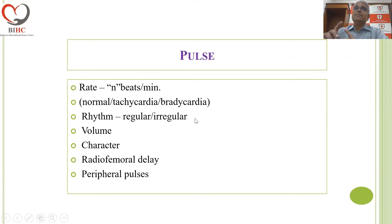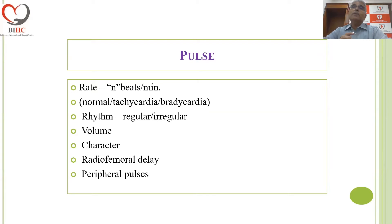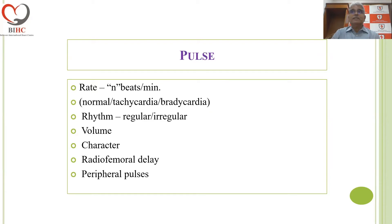When you describe the pulse, it is described as n beats per minute — say 70 beats per minute. You recognize whether it is normal, tachycardia (more than 100) or bradycardia (less than 60). Then, is it regular or irregular? Volume of the pulse, the character of the pulse, radio-femoral delay, and the peripheral pulses. The normal pulse will be described as: pulse is say 80 per minute, regular, normal in volume, normal in character; no radio-femoral delay and all peripheral pulses are felt normally.